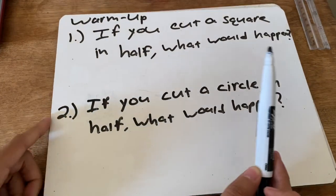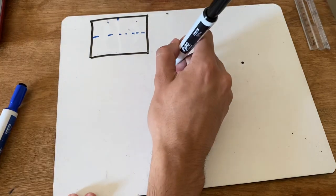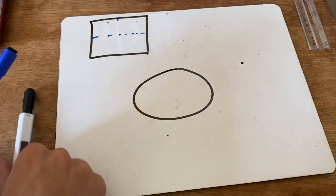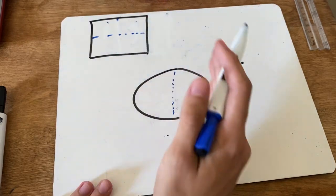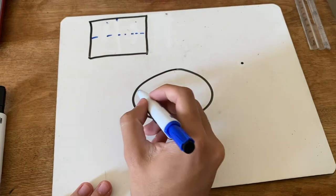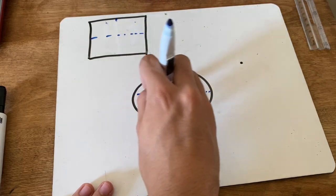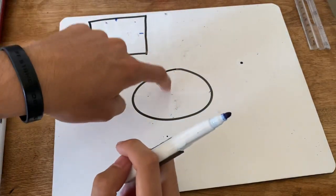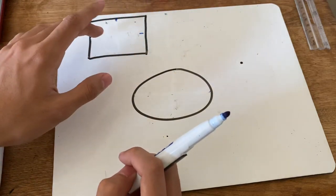Number two: if you cut a circle in half, what would happen? We'll draw a circle. If I cut it in half this way, now this side is the same as this side. What if I cut it in half the other way? Well, now this side is the same as this side. There are other ways you can cut the square and circle in half, but for right now we're just doing those two examples.